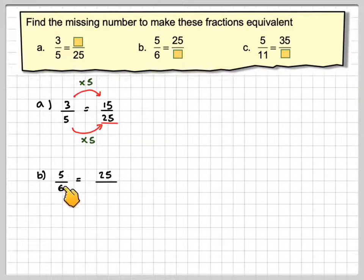B, 5/6 equals 25 over something. Again, how do we get from 5 to 25? We multiply by 5.